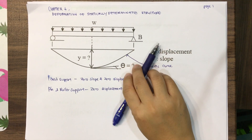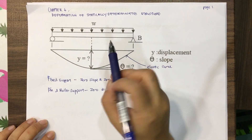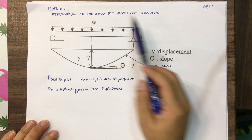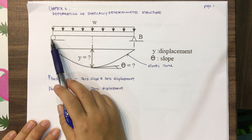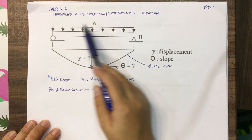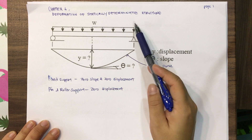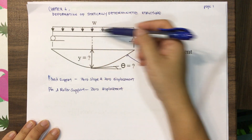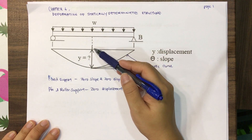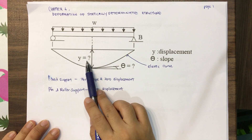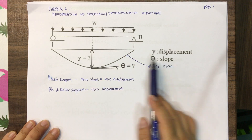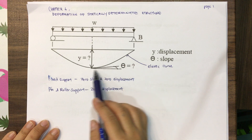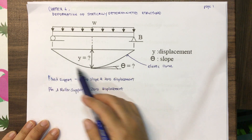Hi guys, so today we are going to learn about chapter 6, which is deformation of statically determinate structures. This is an example of a simply supported beam when a uniform distributed load is applied on it. When a load is applied on the structure, it will cause displacement, which is Y, and also slope for every location. This is the elastic curve for the trend of the deflection.